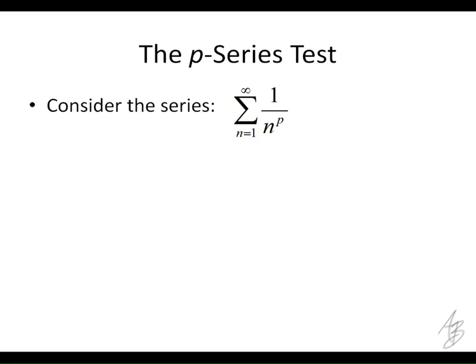On the other hand, if P is smaller, so if we have like 1 over n to the 1 half, which would be 1 over the square root of n, then that's going to make the terms bigger. And if the terms are bigger than a series that's already divergent, then what's going to happen? It's going to diverge, right? You can prove that just using a direct comparison test. So if you have a series that diverges and you have another series that's bigger, term by term, then that series is also going to diverge.